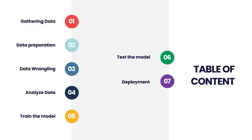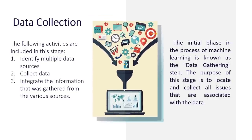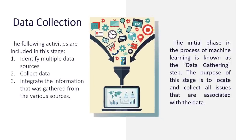Understanding the nature of the issue at hand is the most essential step in the overall procedure. Before beginning the life cycle, we need to have a solid grasp of the problem, as the quality of the ultimate outcome is directly proportional to how well the problem was understood. Data collection is the initial phase: the purpose of this stage is to locate and collect all issues associated with the data. Data may be obtained from a wide variety of sources, including files, databases, devices, the internet, and mobile devices. The effectiveness of the output will be proportional to both the quantity and the quality of the data collected — if more data are collected, the forecast will more accurately reflect reality.